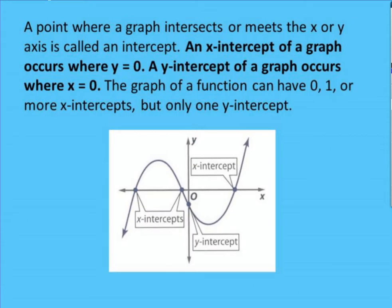A point where the graph intersects or meets the x or y axis is called an intercept. X intercepts occur when the y value is 0, and y intercepts occur when the x value is 0. The graph of a function can have 0, 1, or more x intercepts, but if it is a function, it can only ever have one y intercept.